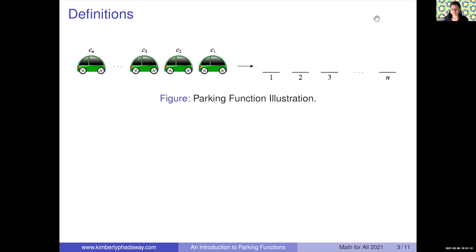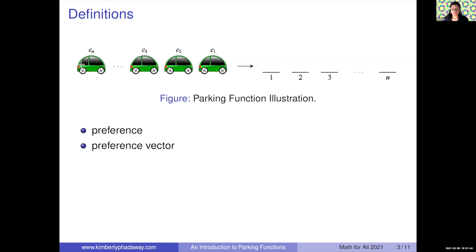If you've seen a car park before, you have some intuition for parking functions. In the diagram on the slide, you can see on the right side we have N parking spots, and this is a one-way street, so the cars can't back up or leave and come back around. We also have N cars waiting to park. Like most drivers, each has a spot they would like most, and we call that their preference. We keep track of each car's preference in a preference vector — the i-th car's preference goes in the i-th spot — and we do allow cars to have the same preference, so they don't have to be distinct.